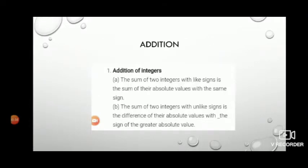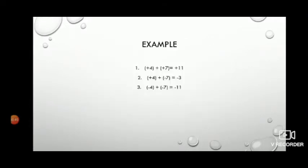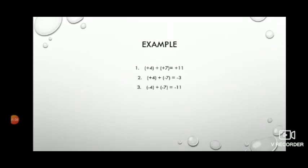The result gets the sign of the larger number. In the examples, examples one and three show numbers with the same sign. Plus four plus plus seven — both are positive, so we get plus eleven. Minus four plus minus seven — both are negative, so we add and get minus eleven. For plus four plus minus seven — one is positive, one is negative, so we subtract to get three, and the bigger number's sign is minus, so the result is minus three.